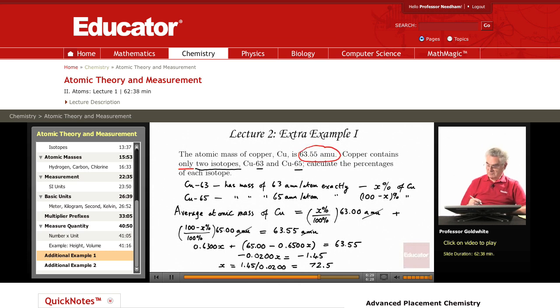So our answer is: 72.5 percent copper-63 and 27.5 percent copper-65. That is the answer to our problem.